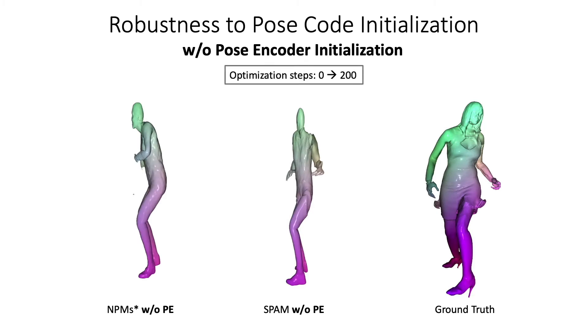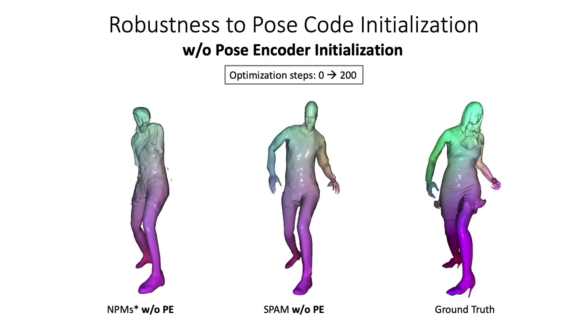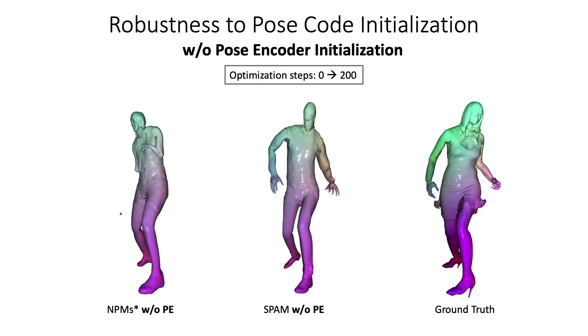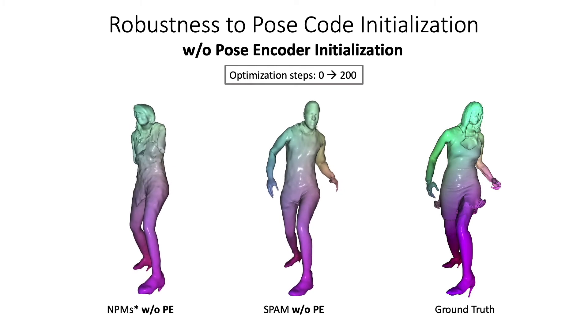For a given time frame in the sequence, we show here how the optimization evolves from a random pose initialization. Despite the very different initial pose, our part-based correspondences allow our optimization to converge appropriately.